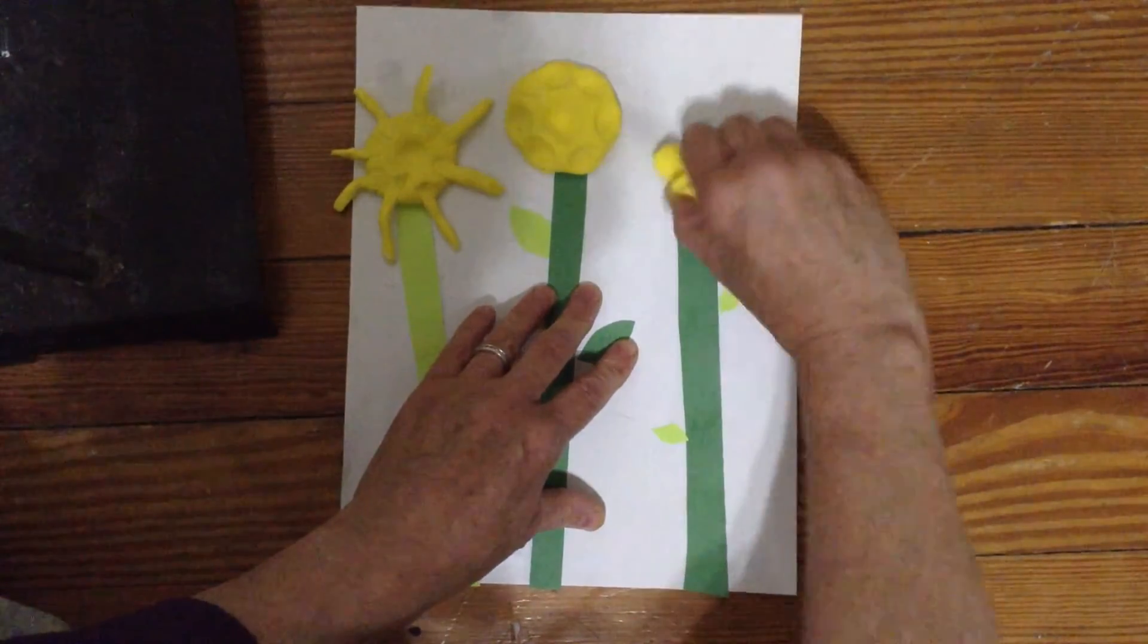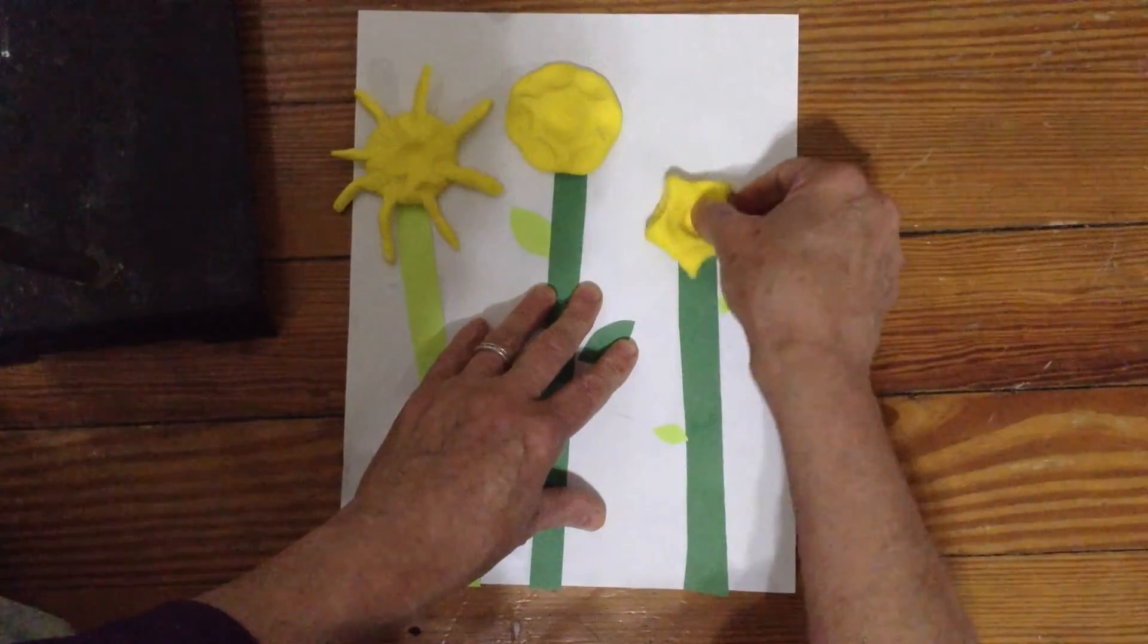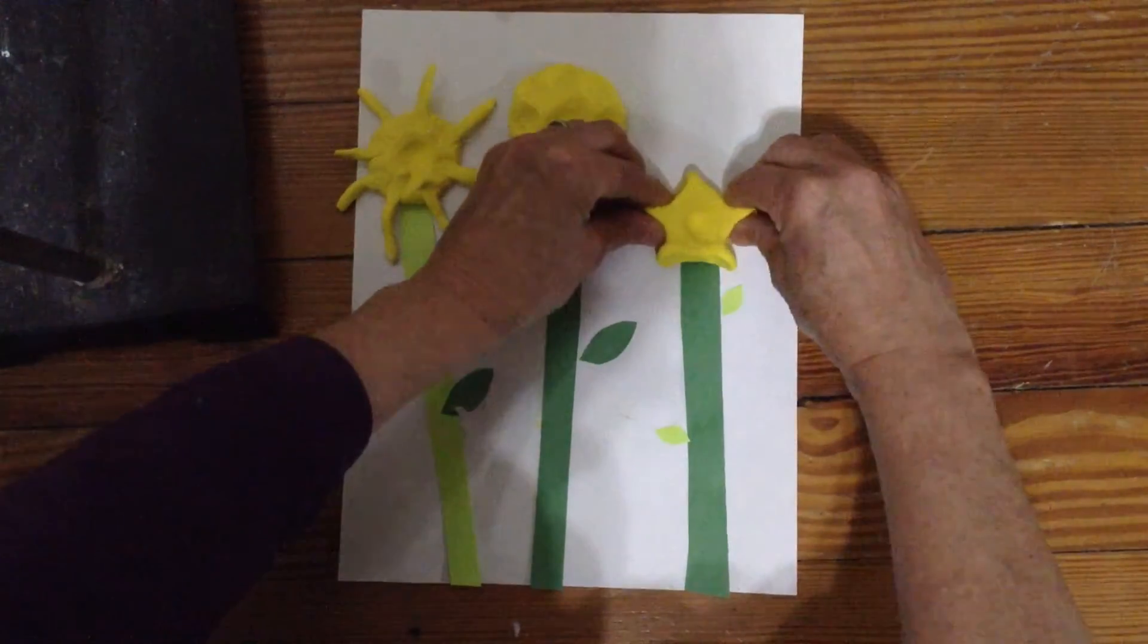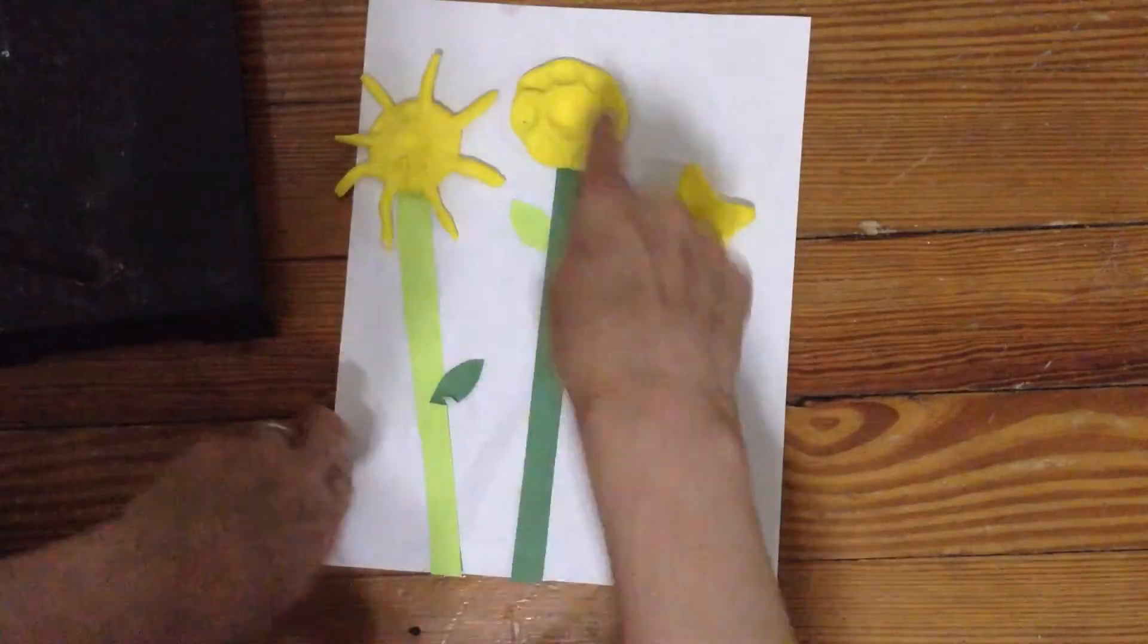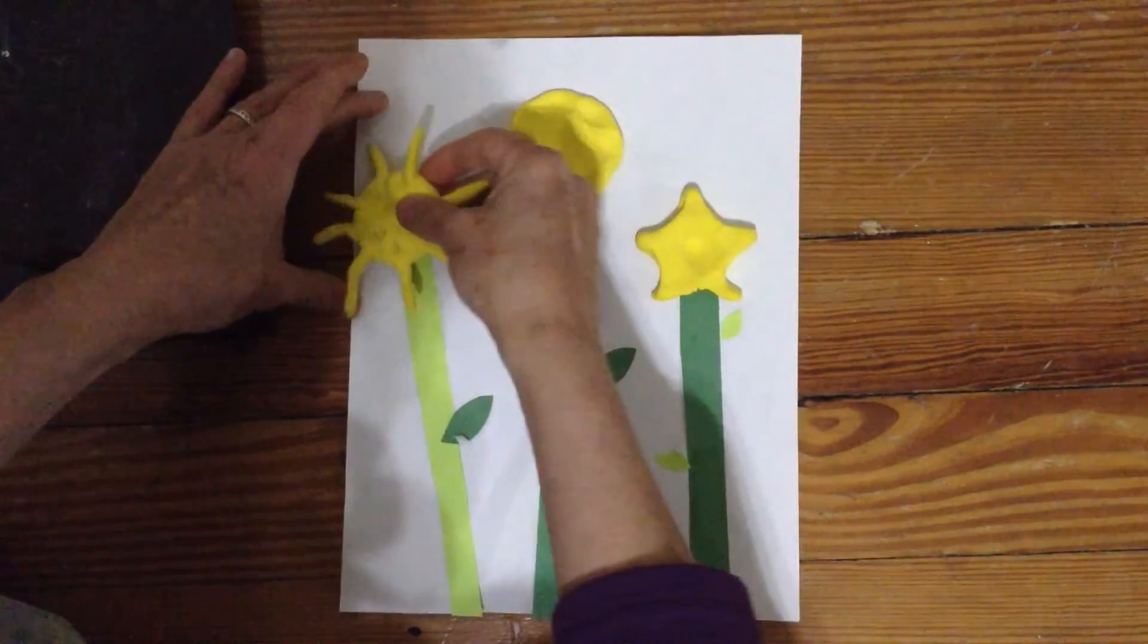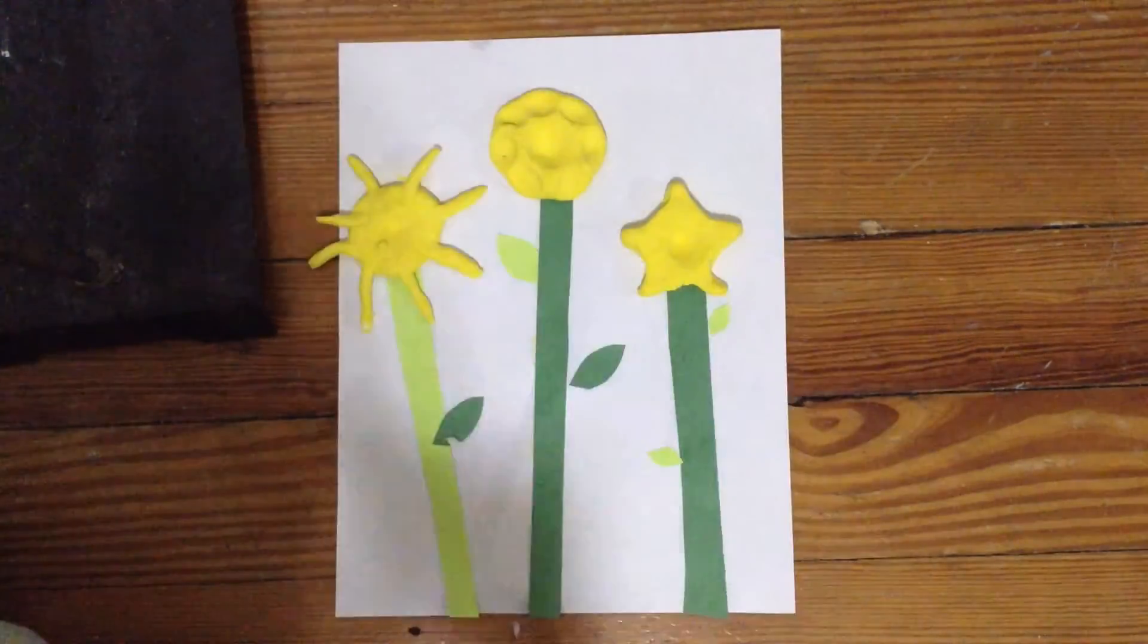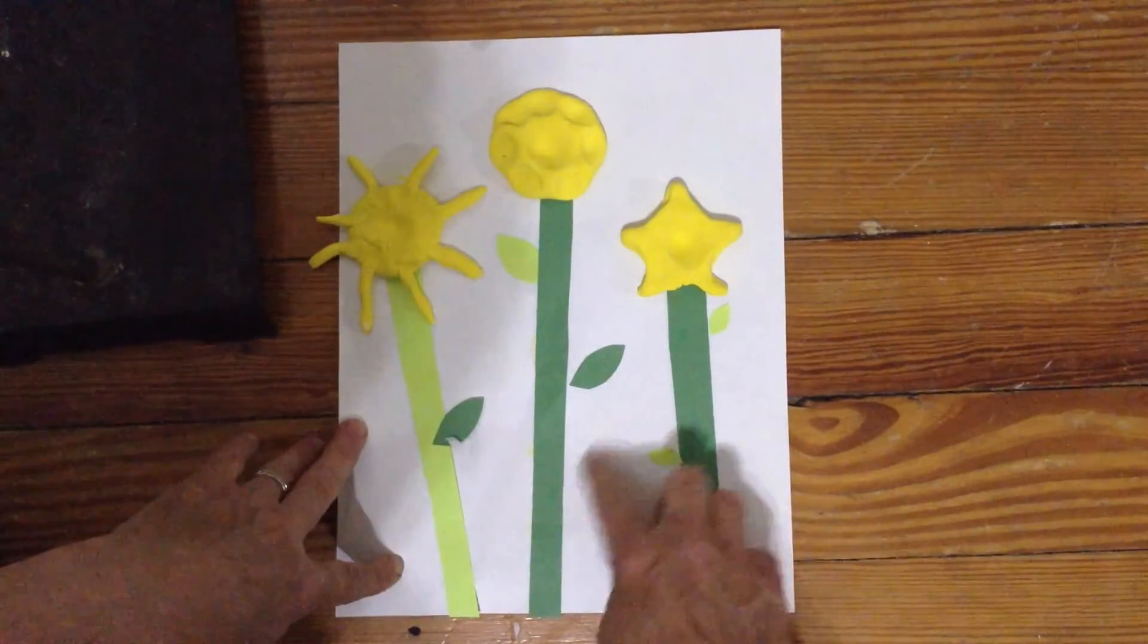Now if I had planned better, I could make them different heights. This one could be the shortest one. This one could be the tallest. And this one could be in between. It makes it a little more interesting.